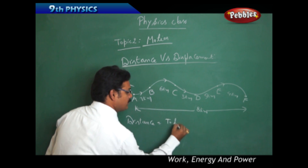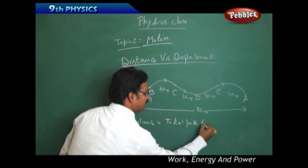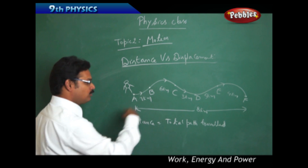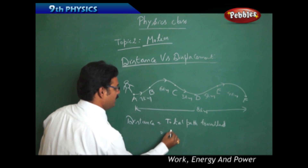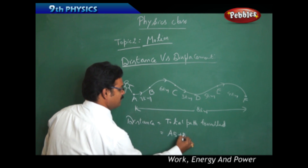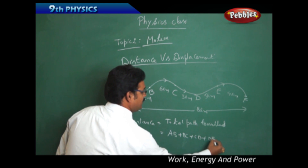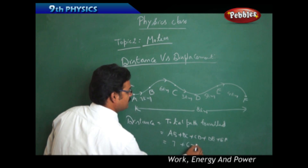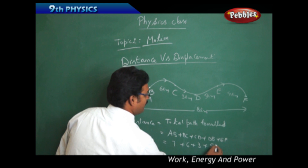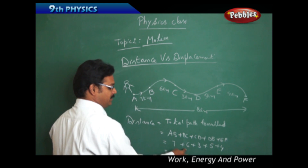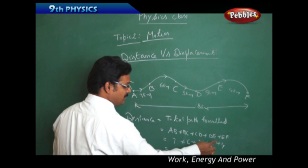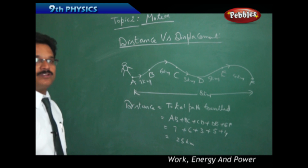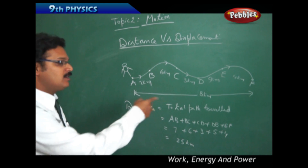Now, if I ask the person what distance he traveled — according to physics, distance is the total path traveled. So in this example, total path traveled means A to B plus B to C plus C to D plus D to E plus E to F, which is 7 + 6 + 3 + 5 + 4 = 25 km. So the total distance traveled by him is 25 kilometers.